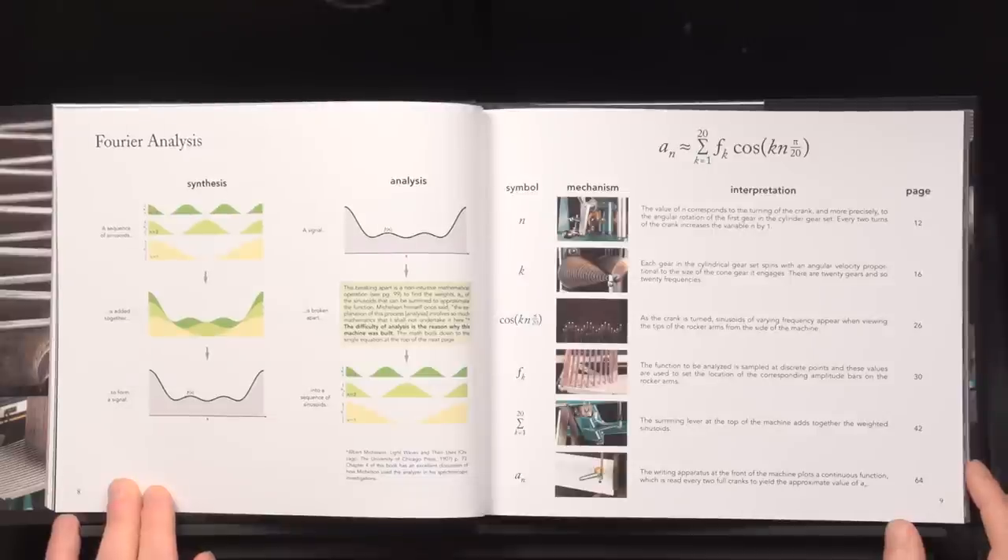On these pages we do the same visual table of contents but for analysis. Now it's easy to understand what analysis does, that's shown visually on the left page. It takes a signal and tells you what sinusoids to add together to approximate that signal. But it's hard to understand exactly how it does this. This difficulty is exactly why this machine was built.